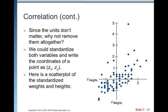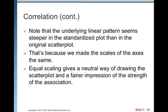Since the units don't matter, why not remove them altogether? We could standardize both variables — find the z-score — and write the coordinates of a point as the z-score for the x-value and the z-score for the y-value. That takes away all the units. Note that the underlying linear pattern seems steeper in the standardized plot than in the original plot because we made the scales of the axes the same. Equal scaling gives a neutral way of drawing the scatterplot and a fairer impression of the strength of the association.